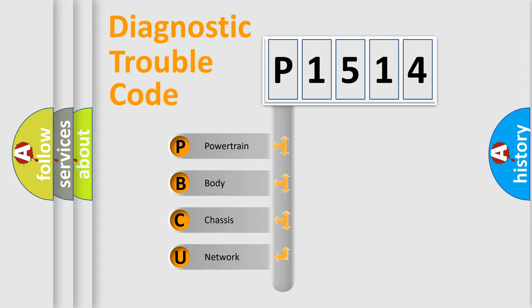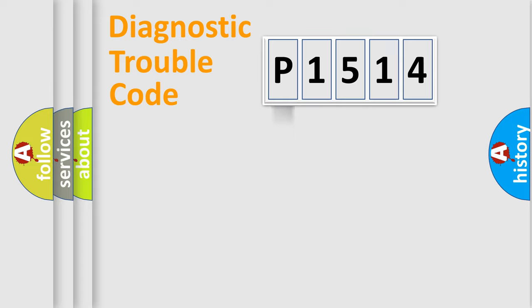We divide the electric system of automobile into four basic units: Powertrain, Body, Chassis, and Network. This distribution is defined in the first character code.